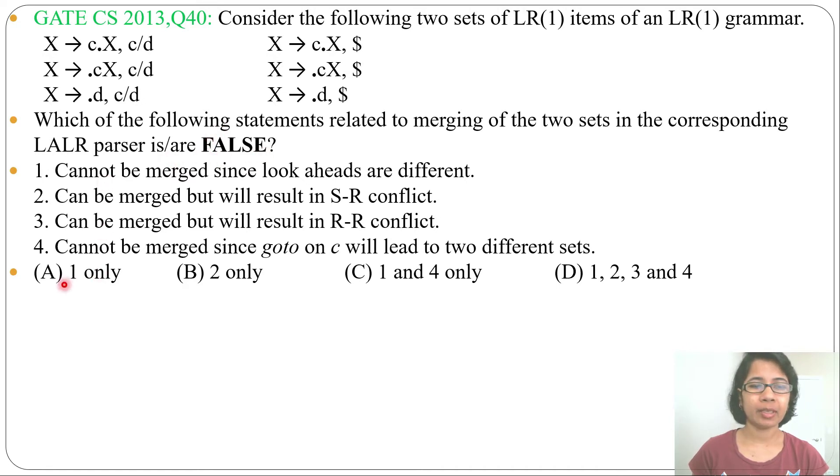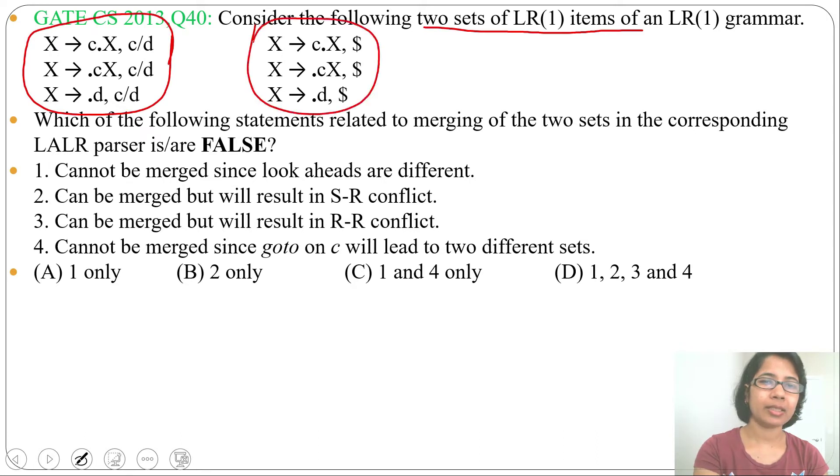Four statements are given and four options are given. These two sets of LR1 items means this is one state and this is another state.